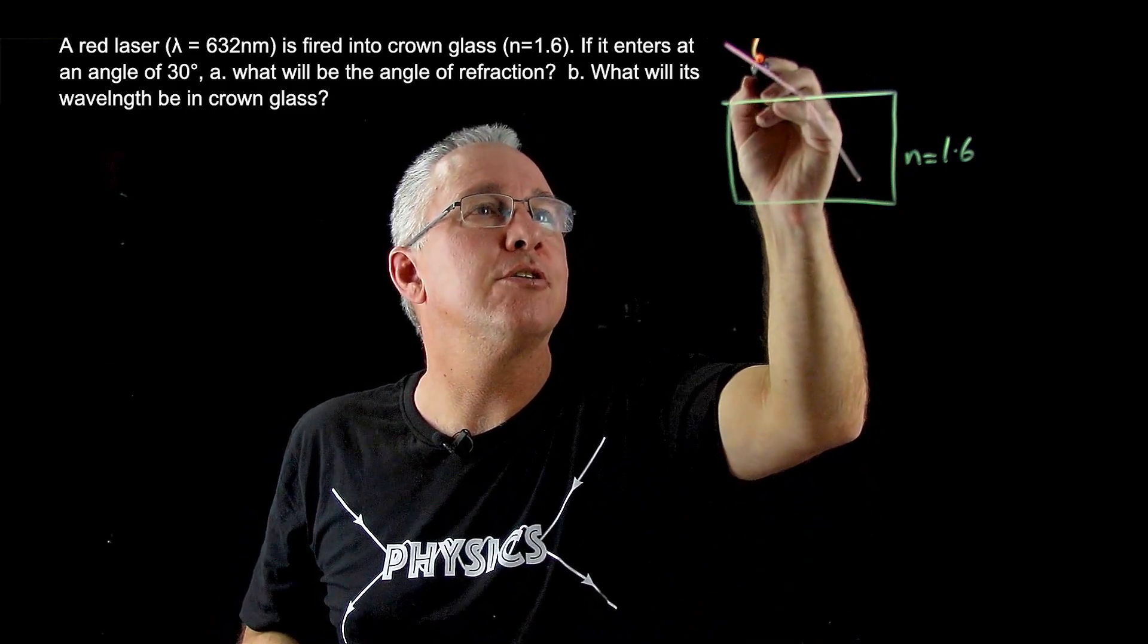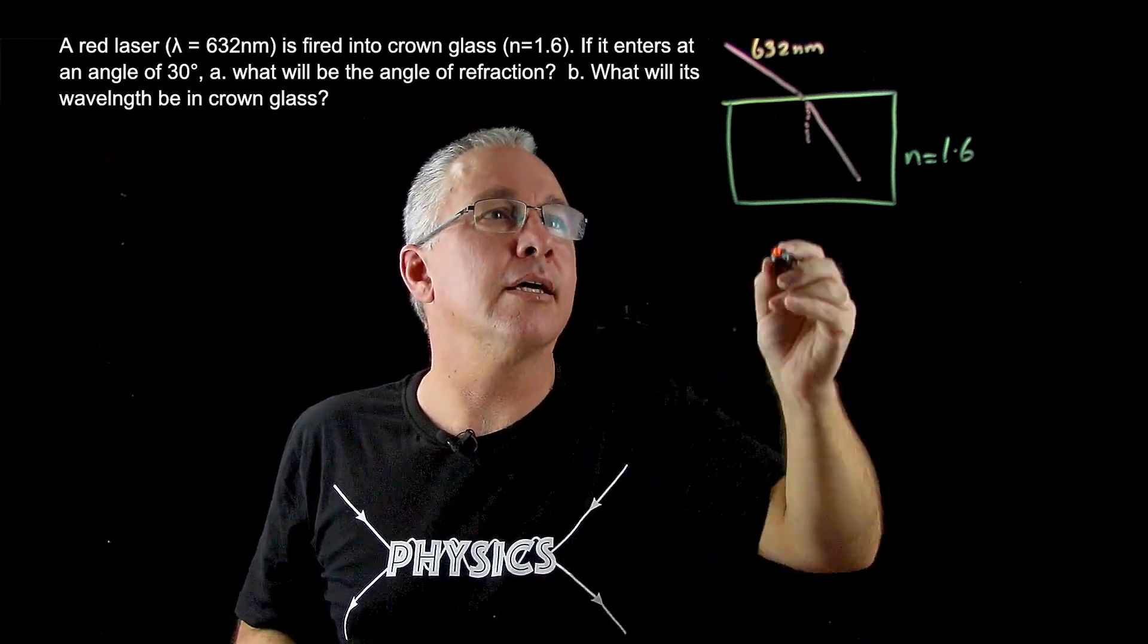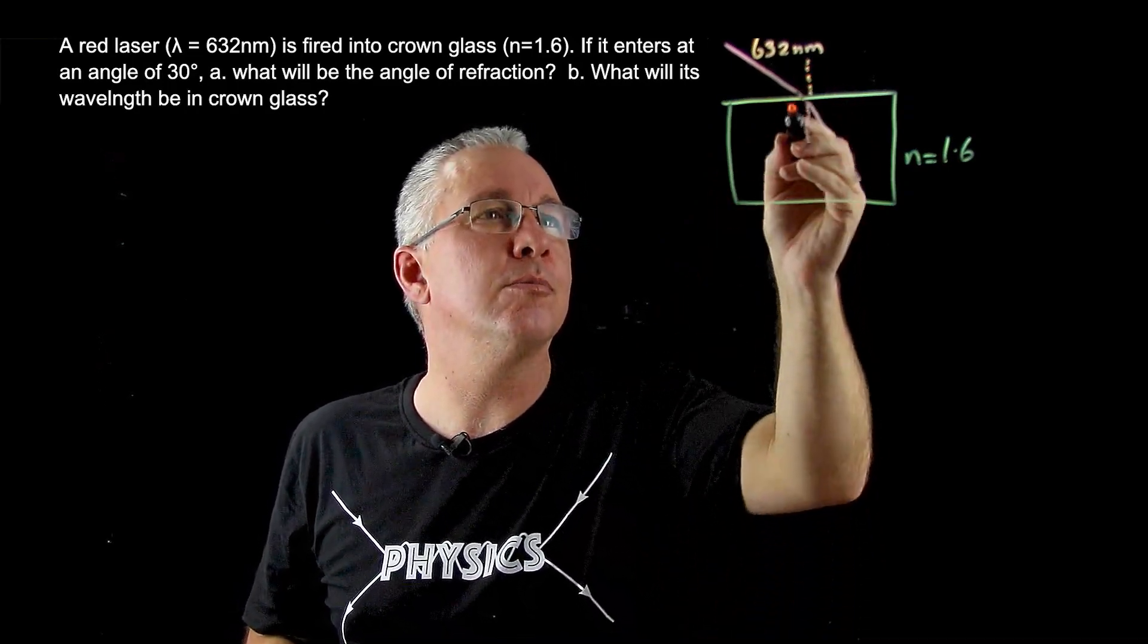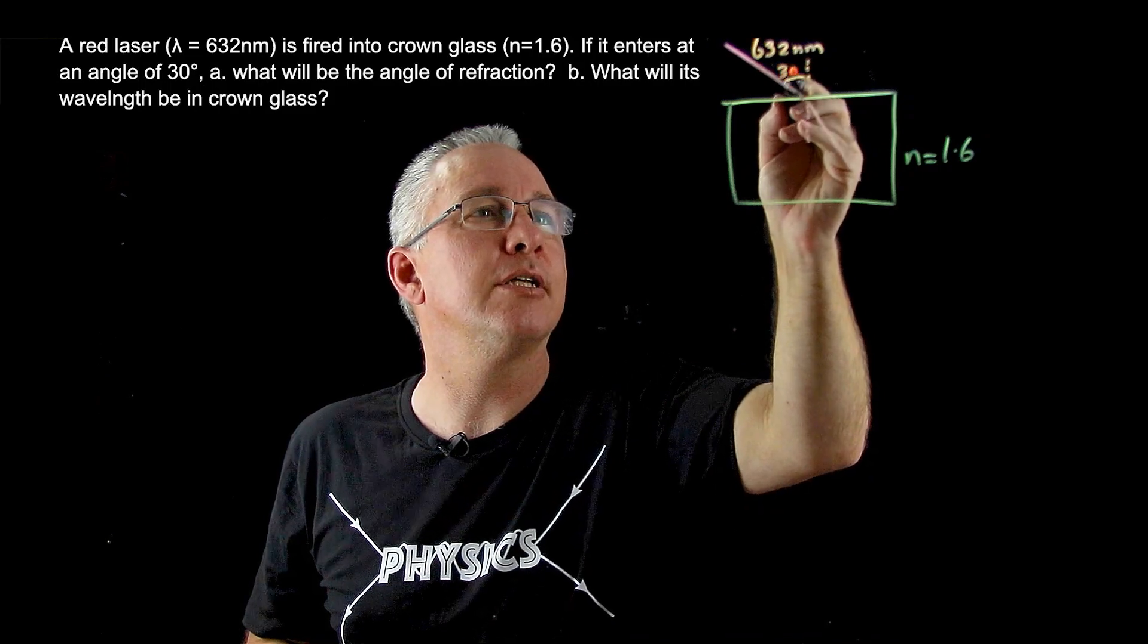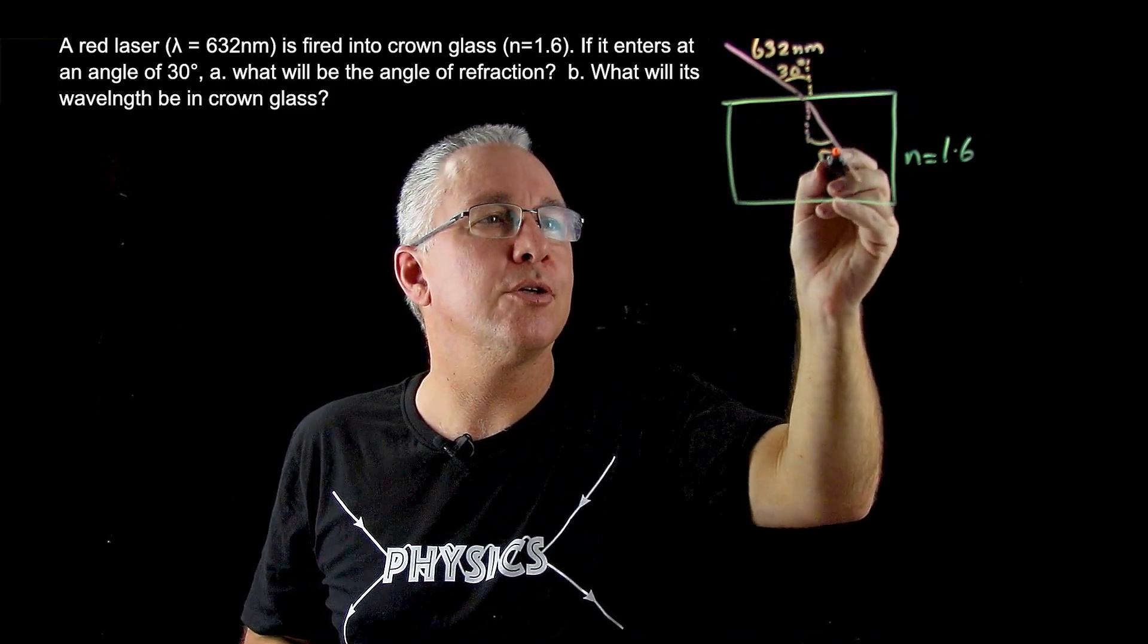So we have 632nm as our wavelength. Our angle of incidence is always measured from the normal. So we know that this is equal to 30 degrees. And we know this is the angle we're looking for, and I'm going to call it R.